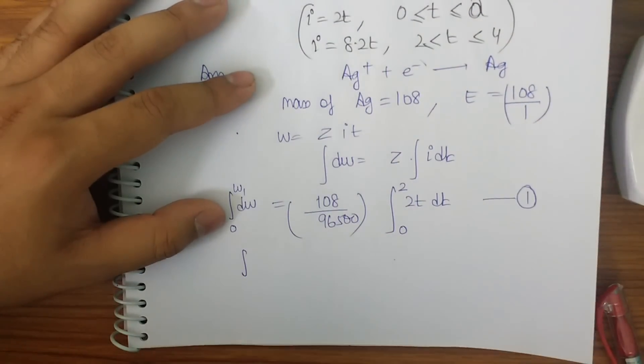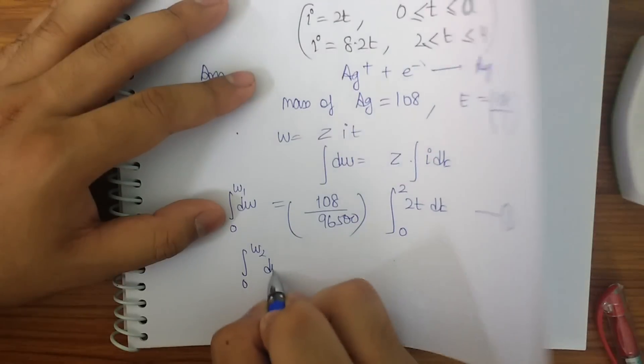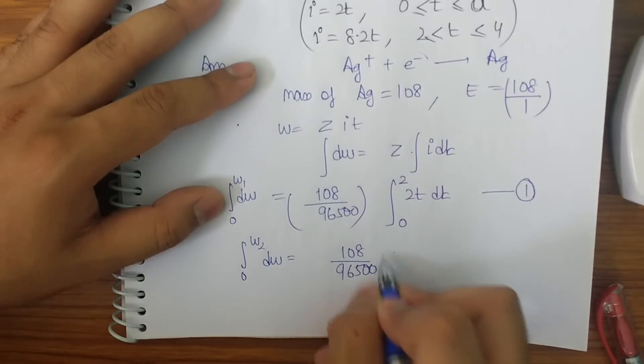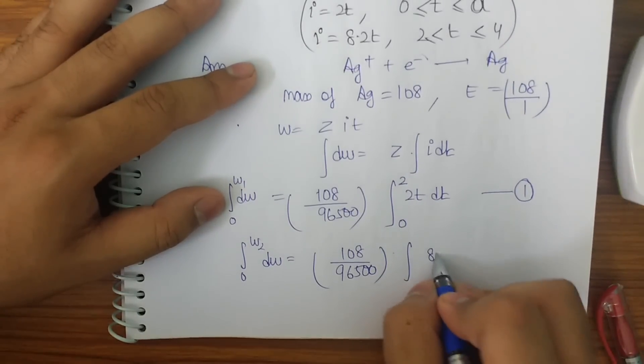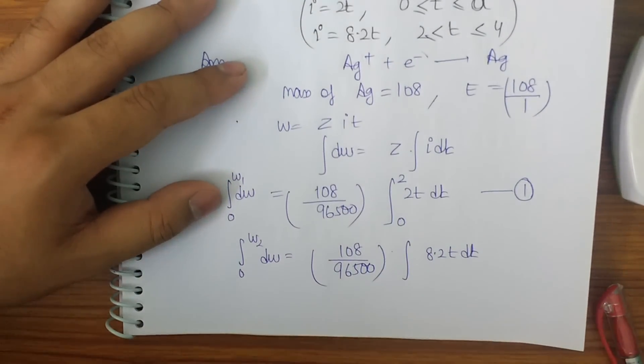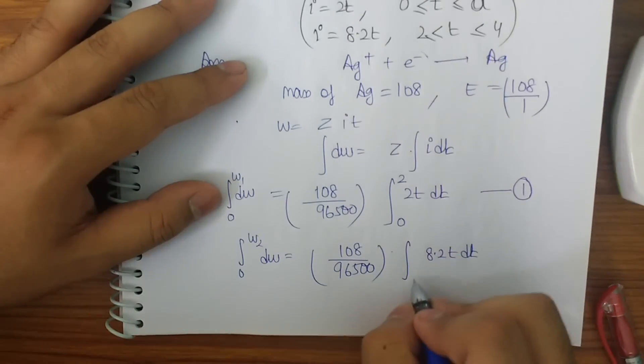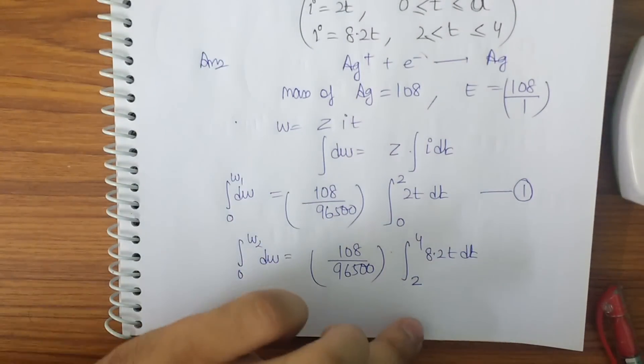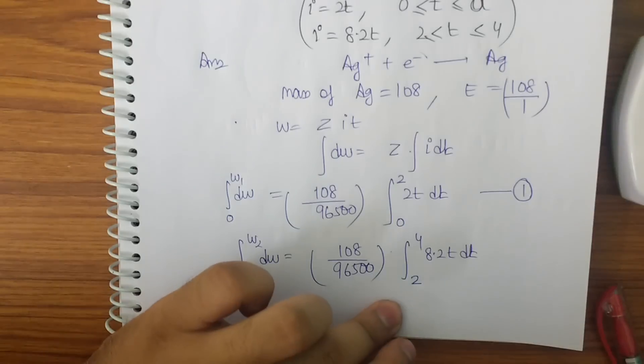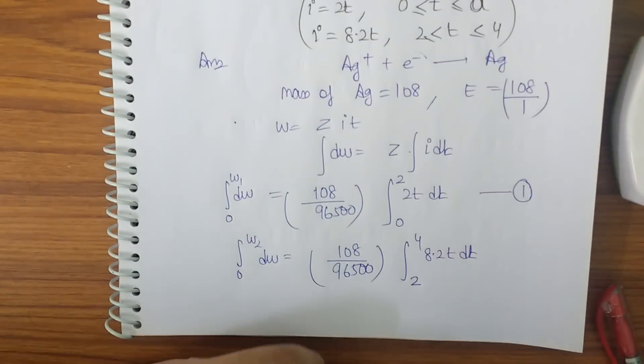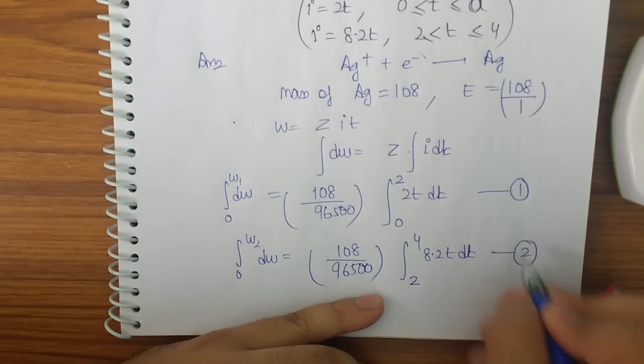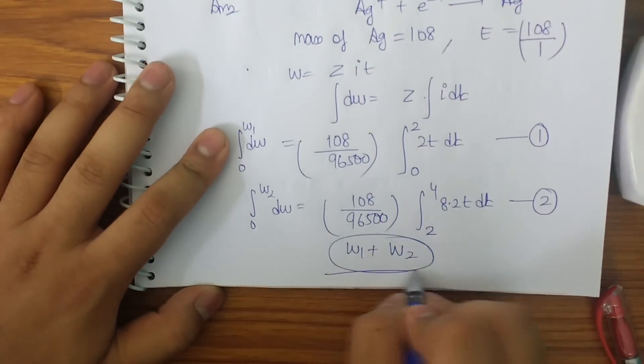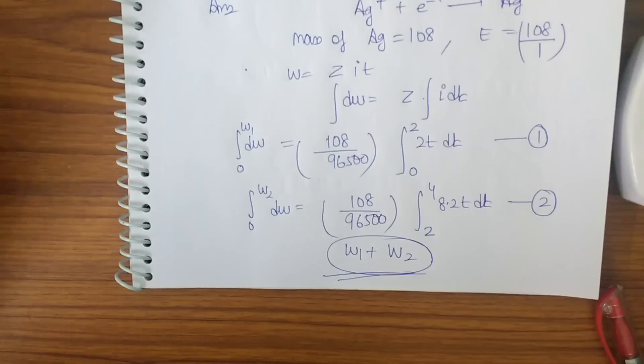Now the current here is from 0 to 2 seconds. So I get equation 1 from here. Now what can be equation 2? Equation 2 will be from 0 to w2 dw is equal to 108 by 96500 integration 8 minus 2t dt. Now what is the net amount that has been transferred here is from t is equal to 2 to t is equal to 4 seconds. Now be careful in this part, we have to replace the limits to be t is equal to 2 from t is equal to 4 seconds, not from 0 to 4. So this is the basic integration that you all can do. And what will be the net amount that we will be getting is w1 plus w2. So this is the way that we have to solve such type of questions.